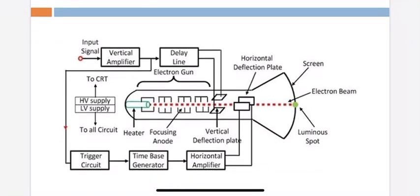The reason for the delay line is this: the signal going to the horizontal deflection plates must pass through the trigger circuit, the time-base generator, and then the horizontal amplifier before reaching the horizontal deflection plates. This path takes more time, so a delay line is inserted in the vertical path to synchronize the signals at both sets of deflection plates.